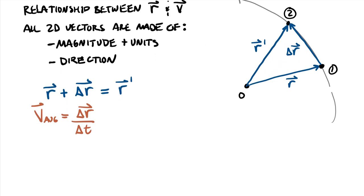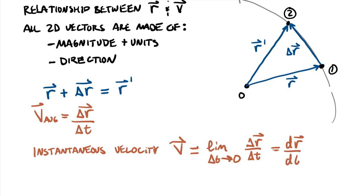So our instantaneous velocity, which will use just the vector label V, so V vector is equal to, what we're going to do is we're going to take a limit of this average velocity to find instantaneous. So in calculus terms here, the limit as delta t approaches zero of this fraction delta R vector divided by delta t is equal to dR/dt. Now using our dot notation we could also call this r vector dot. So not just the time rate of change of the magnitude of the position vector but also the time rate of change of the direction. Both of those things are lumped into our velocity vector.